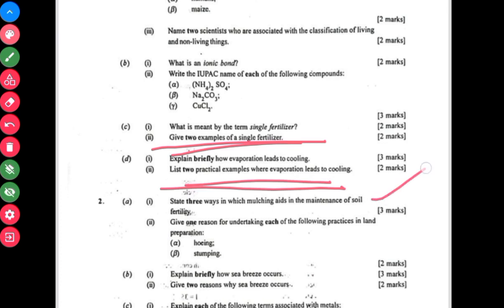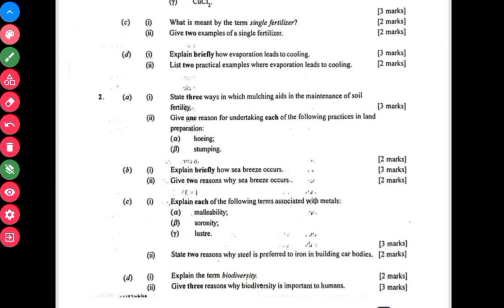Question 2 is also on aggregate. We're looking at mulching, the maintenance of soil fertility, and then these processes: hauling and stamping, undertaking the operation of land. We move on to land breeze and sea breeze. You find it under the topic air movement.